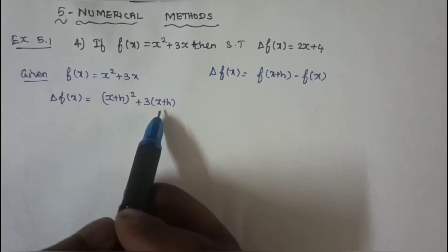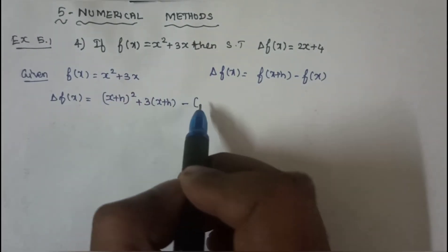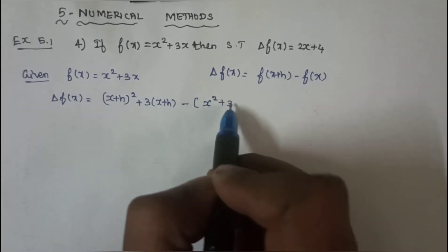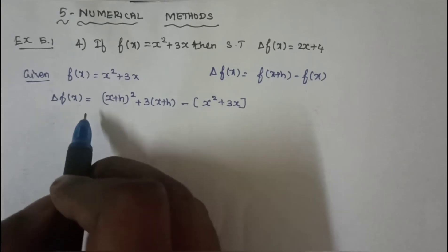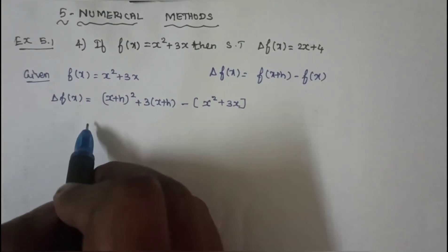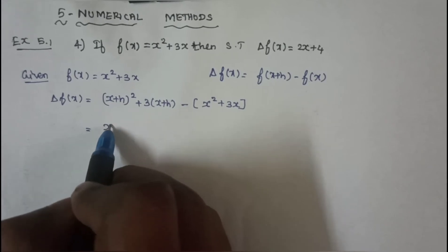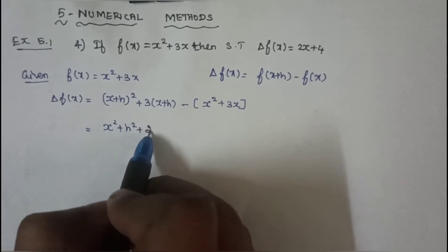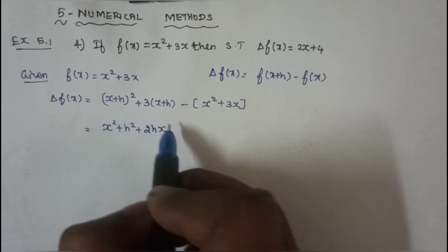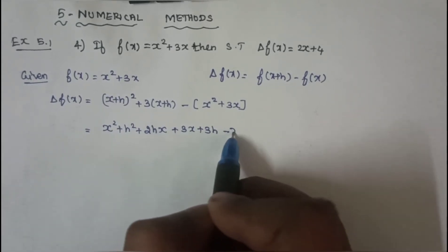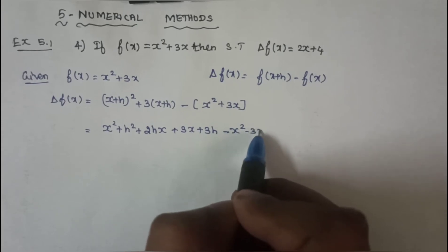First, x plus h term, minus same term x square plus 3x equal to a plus b whole square formula: a square plus b square plus 2ab. If we will multiply, 3x plus 3h minus x square minus 3x.